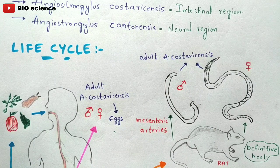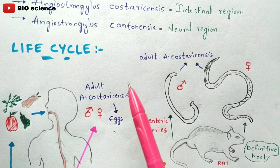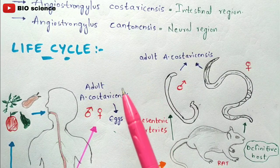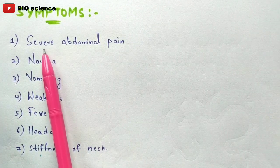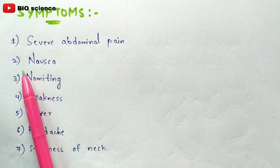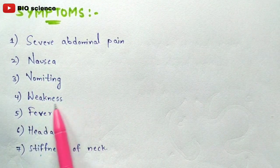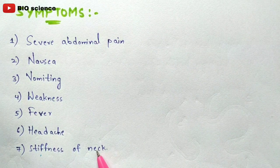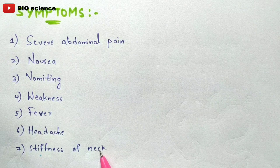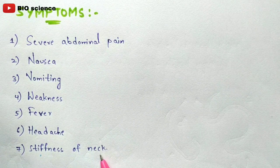Now let us discuss the symptoms seen in a person infected with angiostrongyliasis. The common symptoms include: severe abdominal pain, nausea, vomiting, weakness, fever, headache, and stiffness of the neck. These are the common symptoms observed in a person infected with this disease called angiostrongyliasis.